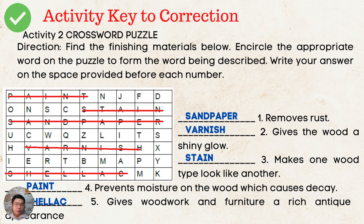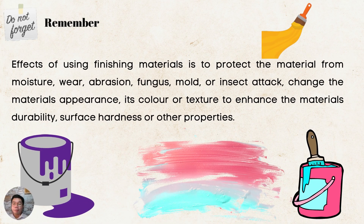Here is the activity two key to correction. Number one, it removes rust — the answer is sandpaper, as you can see in the crossword puzzle. Two, it gives the wood a shiny glow — it's varnish. Three, makes one wood type look like another — the answer is stain. Four, prevents moisture on the wood which causes decay — it's paint. And number five, gives woodwork and furniture a rich antique appearance — the answer is shellac. Always remember: the effects of using finishing materials are to protect the material from moisture, abrasion, fungus, mold, or insect attack, and to change the material's appearance, color, or texture to enhance its durability, surface hardness, or other properties.